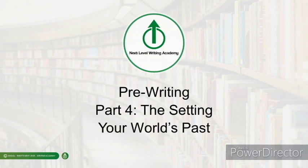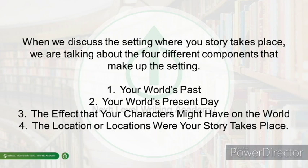The very next thing we are going to be working on is the setting of your story. When we discuss the setting — or where your story takes place — we are actually talking about four different components: your world's past, your world's present, the effect that your leading and villain characters have on the world around them, and the actual location or locations where your story takes place.